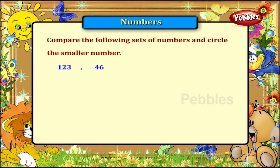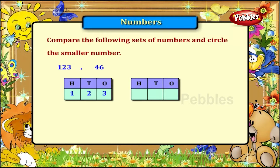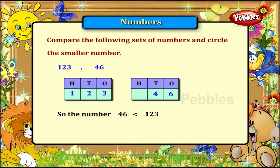123 and 46. The number 123 has 3 digits and the number 46 has only 2 digits. So the number 46 is smaller than 123. We circle the number 46.